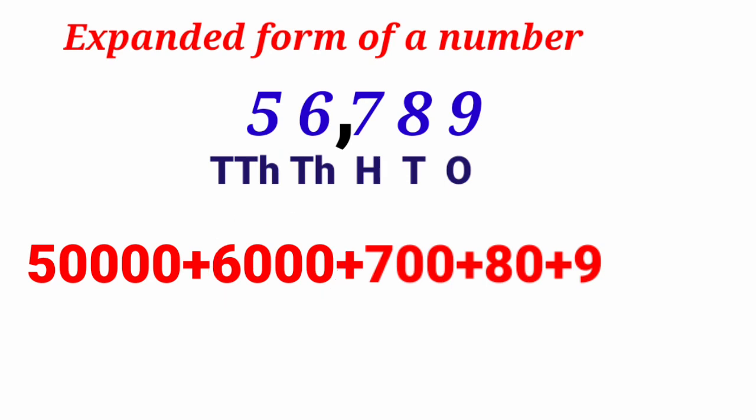Next is seven. Seven it is at hundreds place. So we will write plus seven hundred. Next it is eight which is at tens place. So we will write it as plus eighty. And the last digit nine it is at ones place. So it will be written as only nine, and it is plus nine.